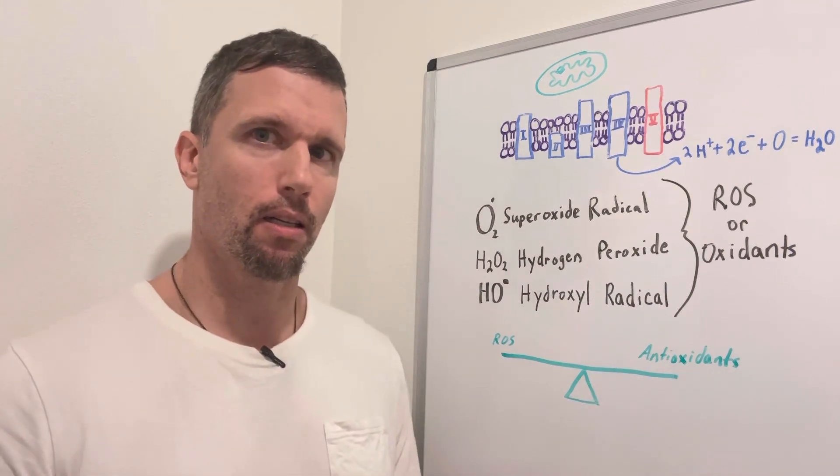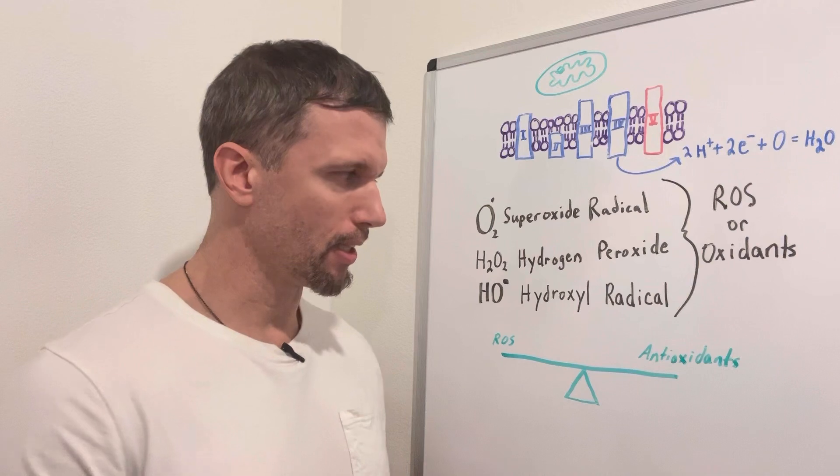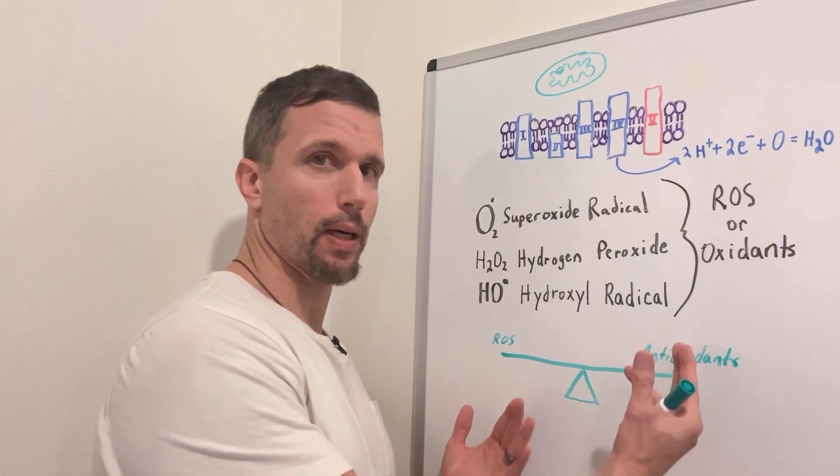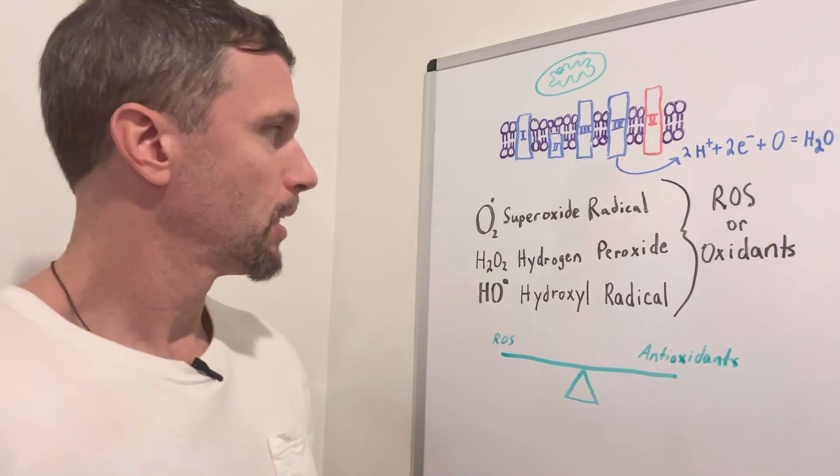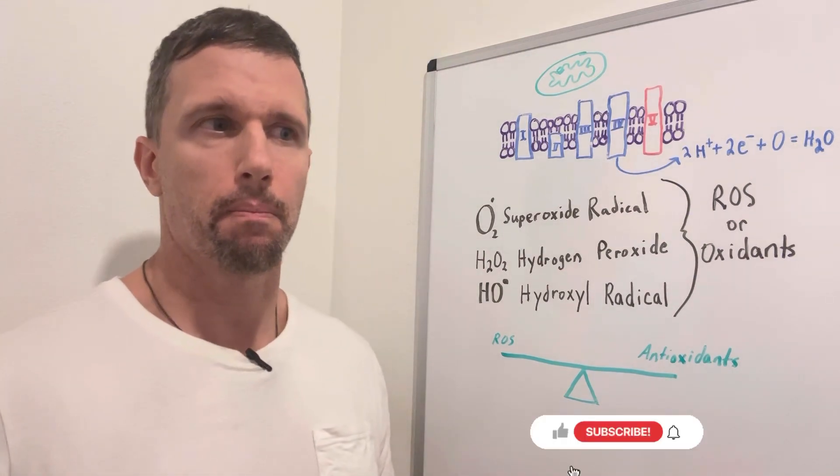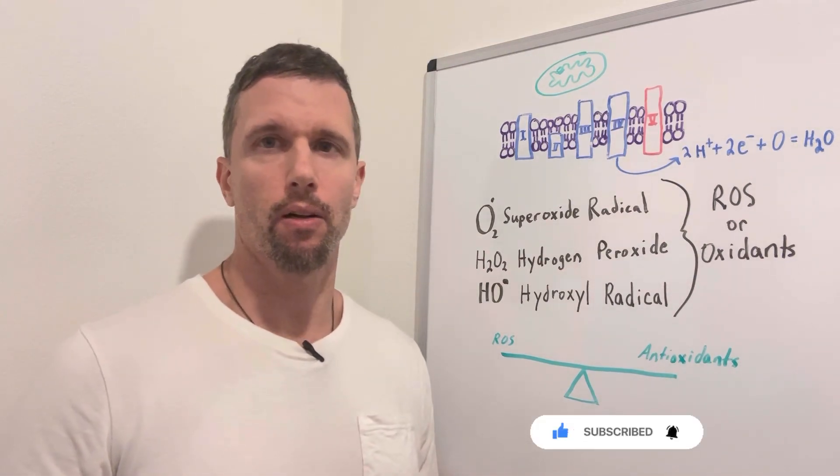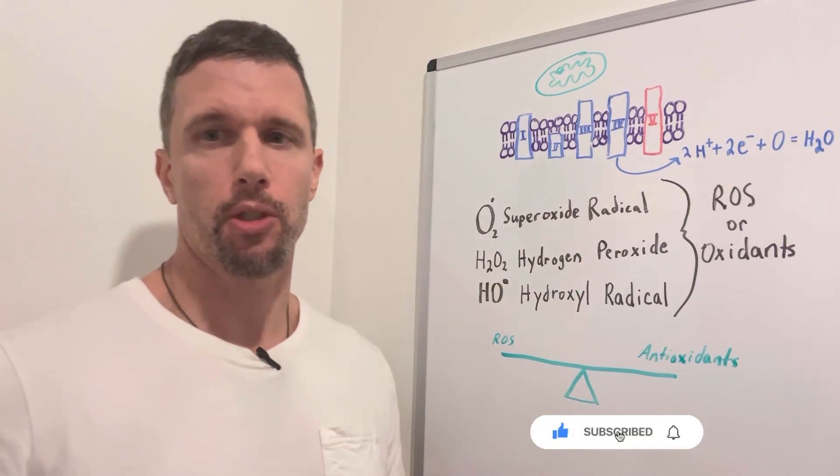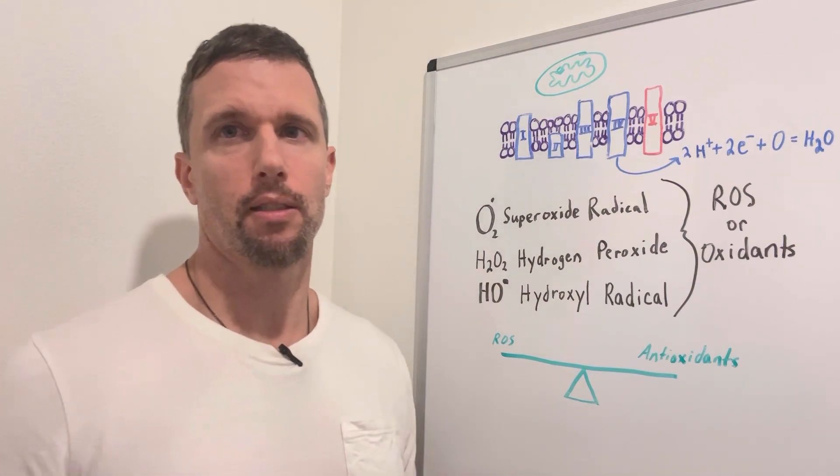If you take all these exogenous antioxidants, it can kind of throw the balance the other way. So I hope this helps. I hope this helps you understand how you can kind of balance this scale and really try to prevent premature aging and all these degenerative diseases. Thanks.